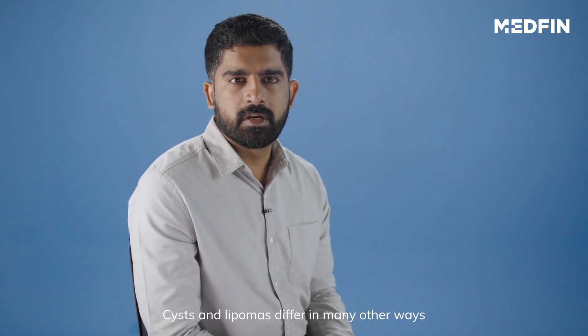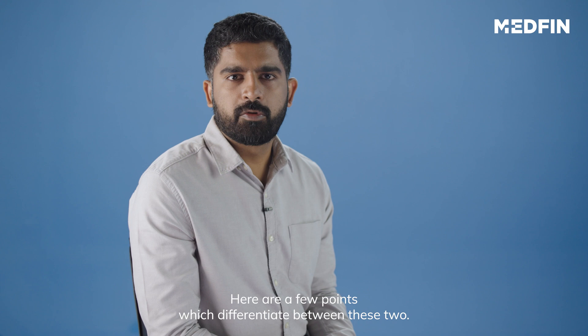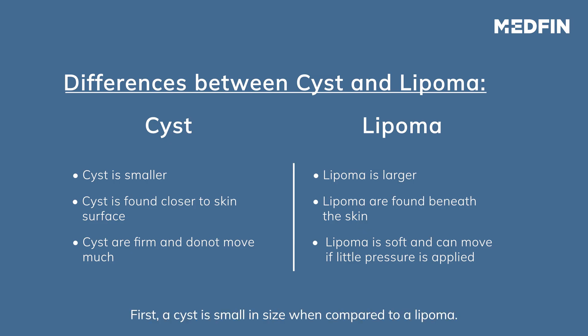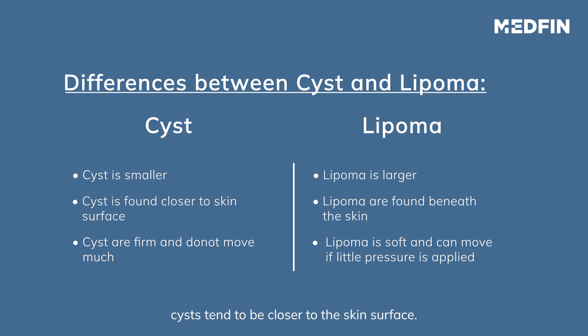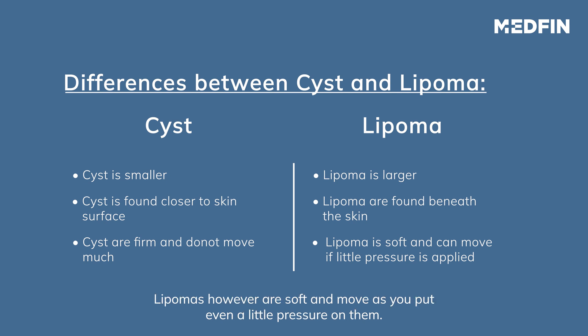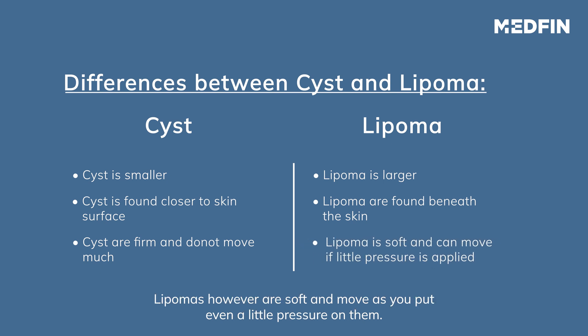Cysts and lipomas differ in many other ways. Here are a few points which differentiate between the two. First, a cyst is small in size when compared to a lipoma. Second, cysts tend to be closer to the skin surface, whereas lipomas are found much deeper beneath the skin. Next, cysts are firm and do not move much. Lipomas, however, are soft and move when you apply a little pressure on them.